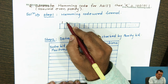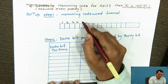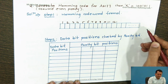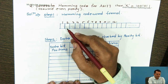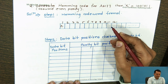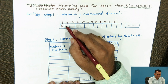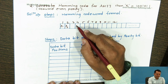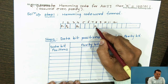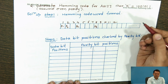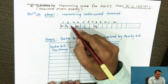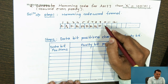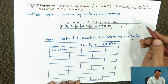If you consider the bit locations 1, 2, 3, 4, 5, 6, 7, 8, 9, 10, 11, 12 and so on, then powers of two — position 1 (2^0), position 2 (2^1), position 4 (2^2), and position 8 (2^3) — are check bits P1, P2, P4, and P8. The remaining positions are data bits D1 through D7.